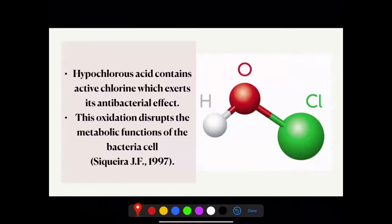Why hypochlorous acid? Unlike sodium hypochlorite, hypochlorous acid has yet to be fully investigated in the dental field. When sodium hypochlorite is combined with water, hypochlorous acid forms. Hypochlorous acid contains active chlorine, which exerts its antibacterial effect through the oxidation of SH groups and essential enzymes, disrupting the metabolic functions of the bacterial cell. Further, chlorine can mix with cytoplasmic components to form N-chlorocompounds, which destroy the microorganism. Made up of sodium chloride, hypochlorous acid, and water, hypochlorous acid is classified as a non-hazardous chemical.